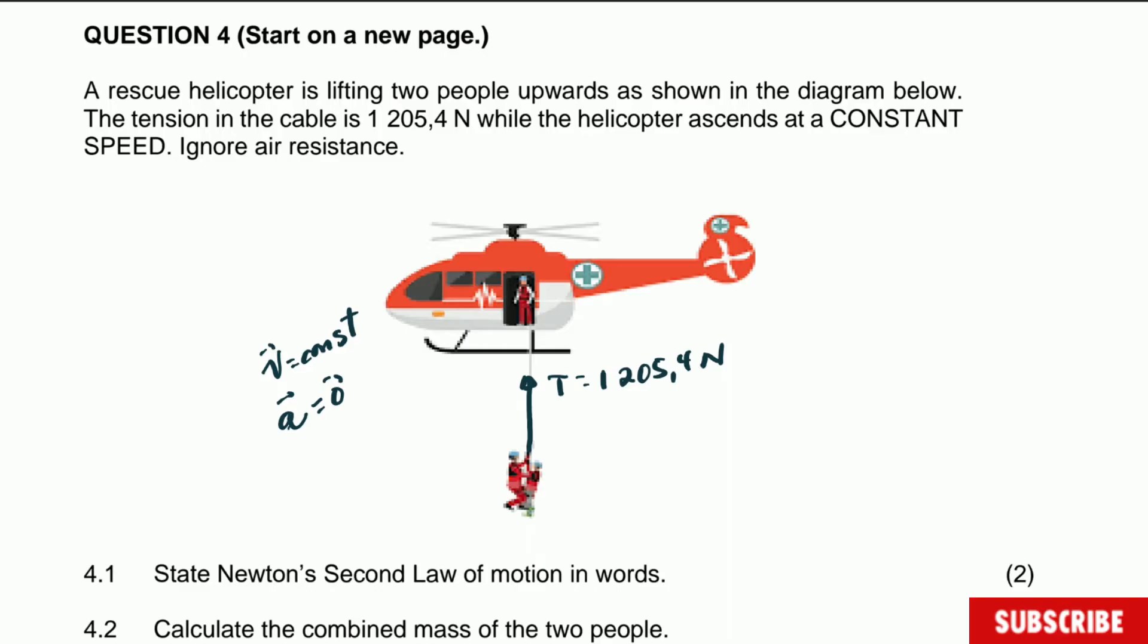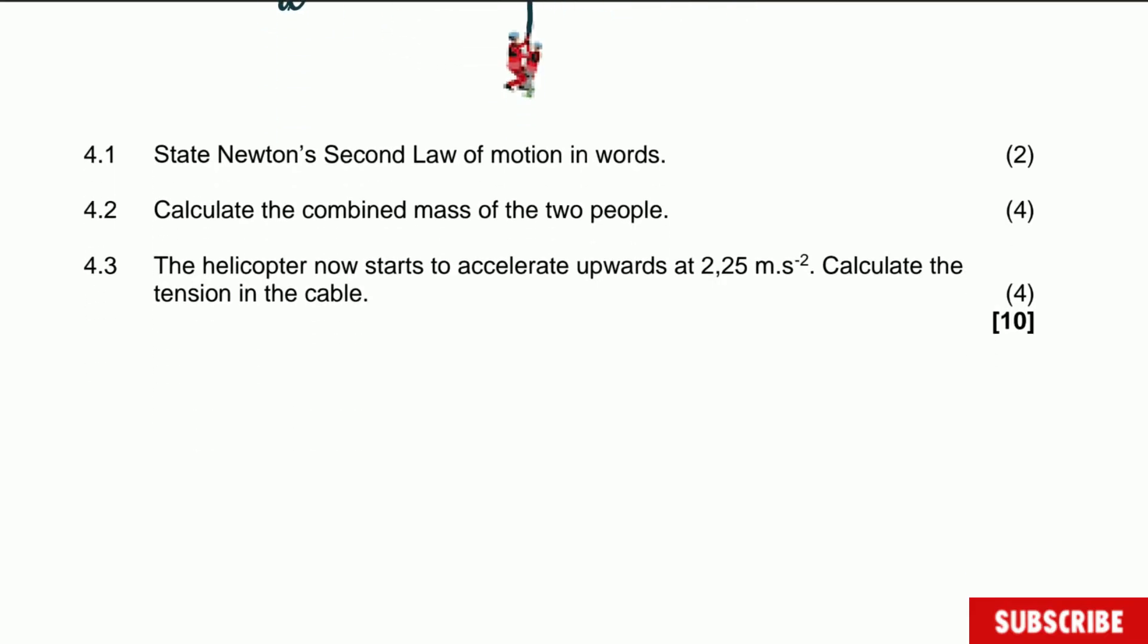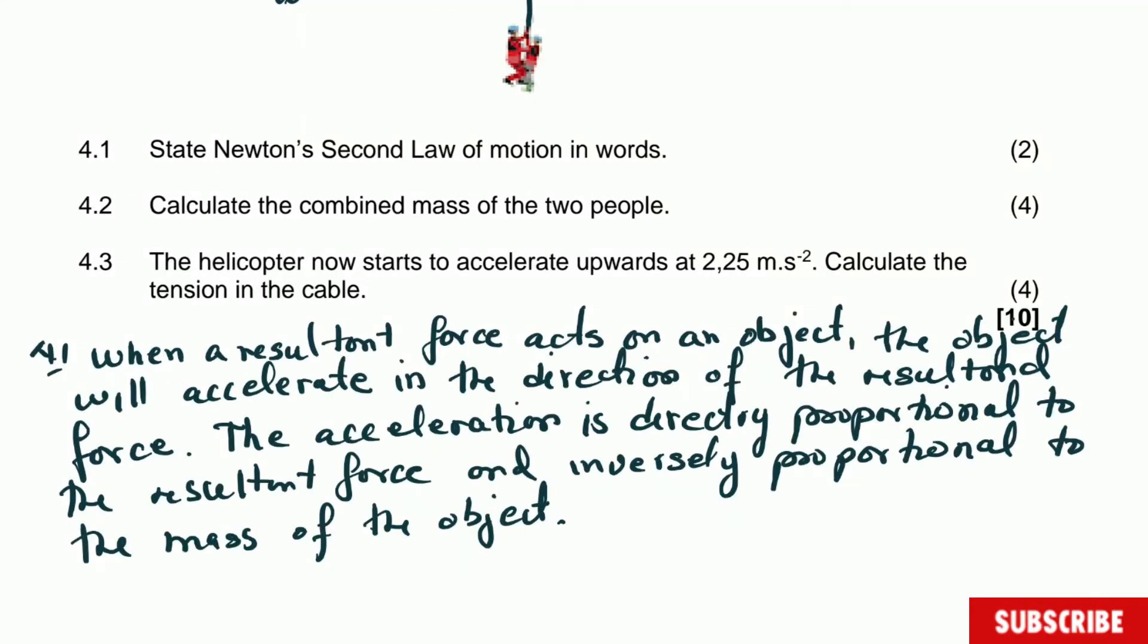State Newton's second law of motion in words. So let's quickly write down Newton's second law of motion in words here. The law states that when a resultant force acts on an object, the object will accelerate in the direction of the resultant force. The acceleration is directly proportional to the resultant force, and inversely proportional to the mass of the object. That's the second mark for this definition.